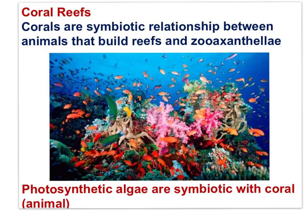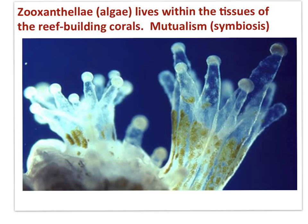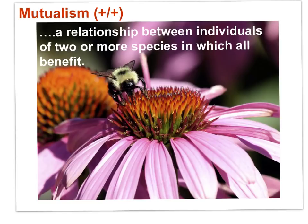Corals are a symbiotic relationship between reef-building animals and zooxanthellae algae — photosynthetic algae living within the tissues of the coral animal. Corals are found in tropical regions near the equator with high light and warm temperatures, resulting in high photosynthetic productivity. This is a good example of a mutualistic symbiotic relationship. The bee receives food as pollen and in turn distributes pollen to other plants as part of plant sexual reproduction — this is mutualism.